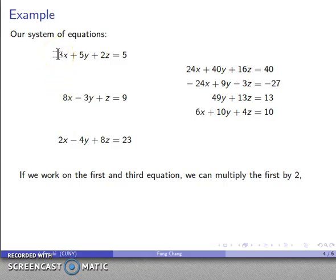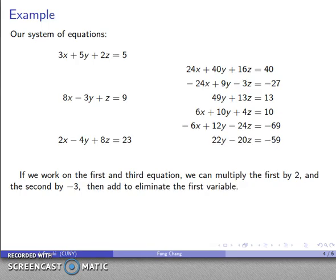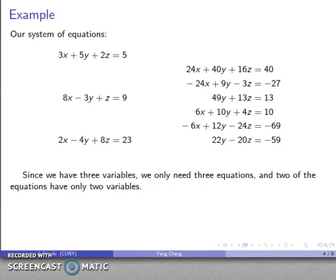Likewise, I can work with the 1st and 3rd equation, so I'll multiply the 1st equation by 2, the leading coefficient of the 3rd equation, so that gets me that. I'll multiply the 3rd equation by negative 3, that's the leading coefficient of my 1st. And again, what that does is that gets my x coefficient to be equal but opposite, so when I add them, that x coefficient drops out.